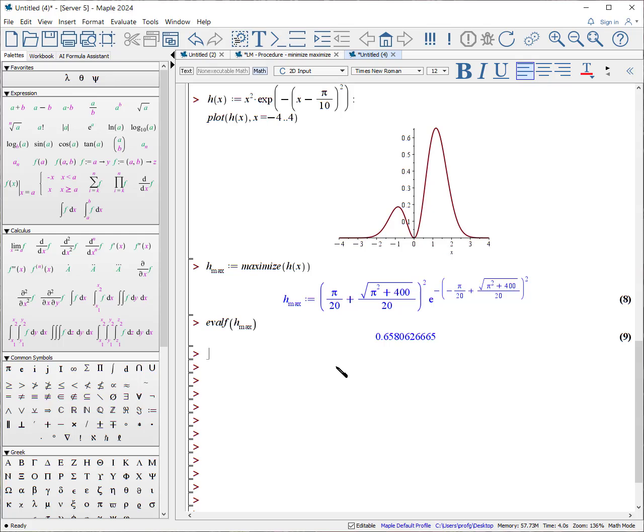Well, to do that, we set the limit of where we want Maple to do the search. h_max_local colon equals maximize h(x), where x goes from minus 10 dot dot to 0, and it will look only in that region.